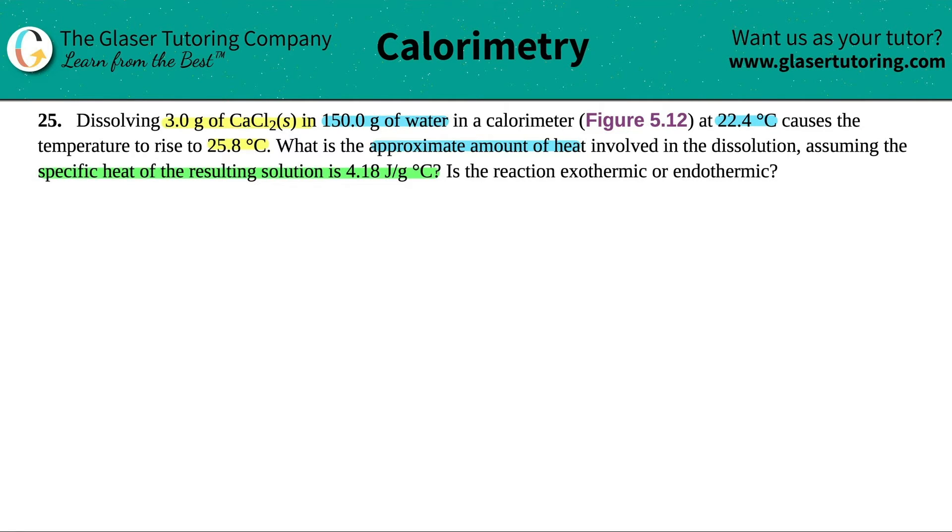Now, the things that are more important here are the numbers. Basically, we have water and something being added into the water. In this case, it's an ionic compound, calcium chloride. We've done tons of problems with metals being dropped into water, but this is now an ionic compound with water. So these are solution questions, and these are actually easier than the metal ones.